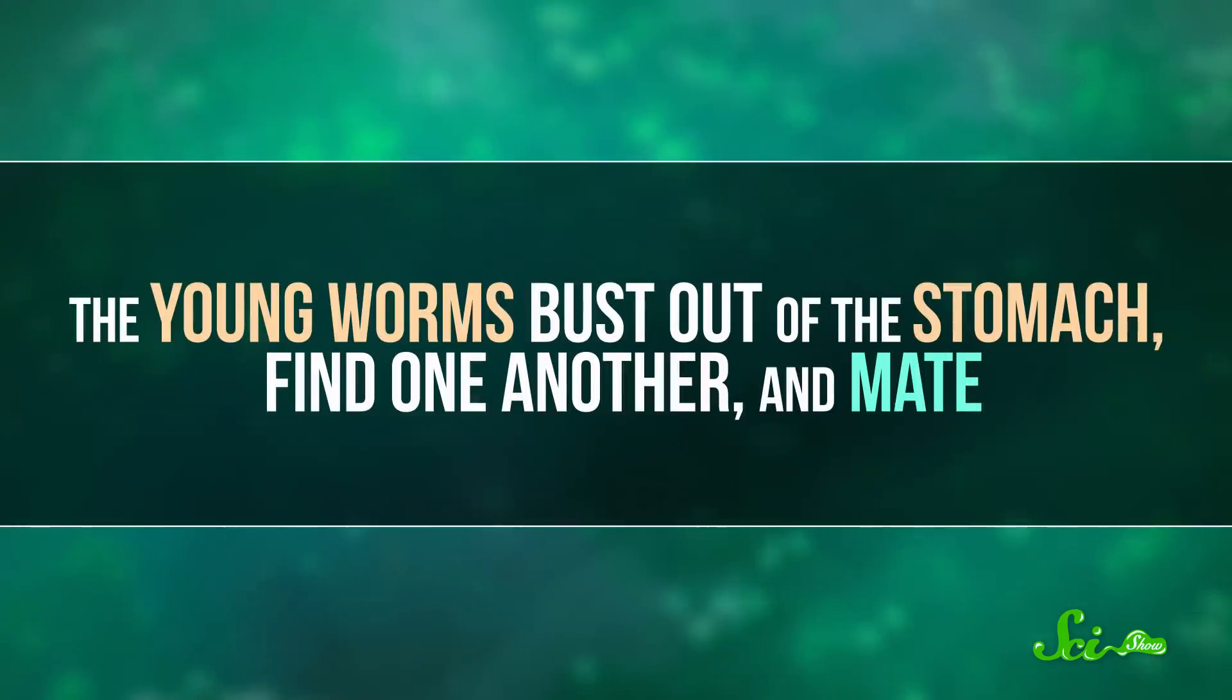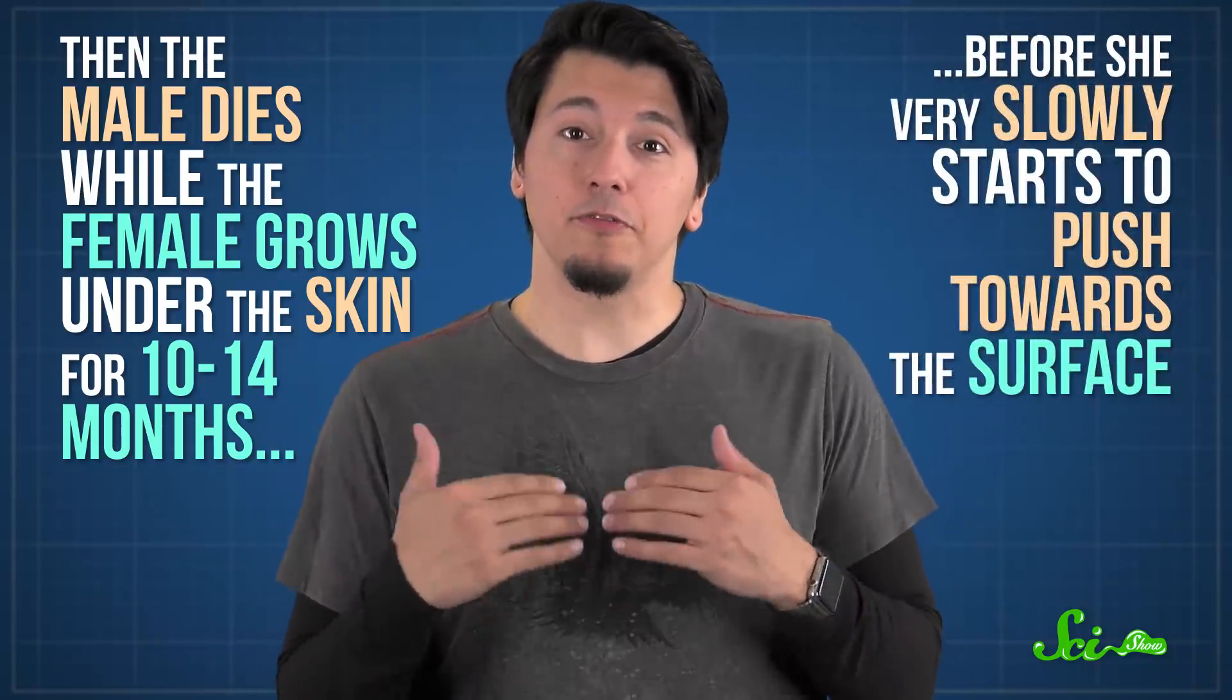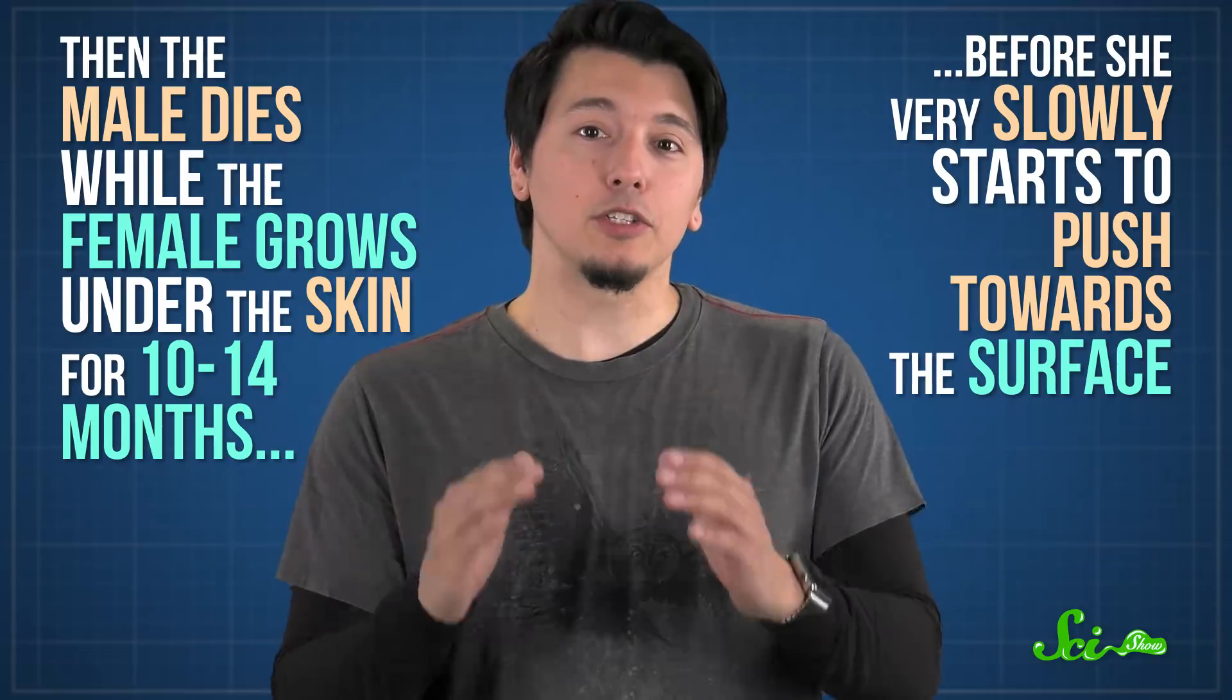The young worms bust out of the stomach, find one another, and mate. Then the male dies, while the female grows under the skin for 10-14 months before she very slowly starts to push towards the surface. As she does, the person usually develops a fever and painful swelling at the site of her eventual emergence.